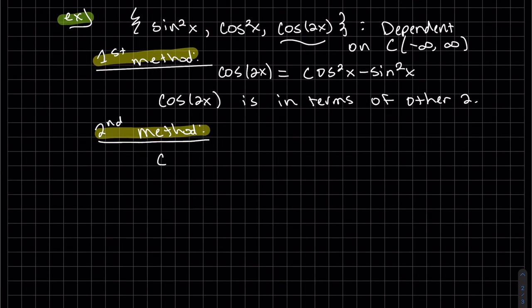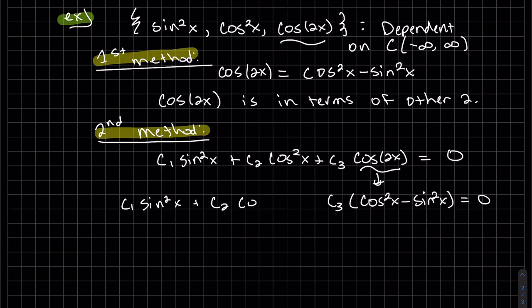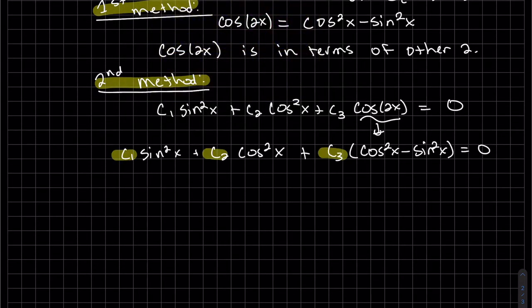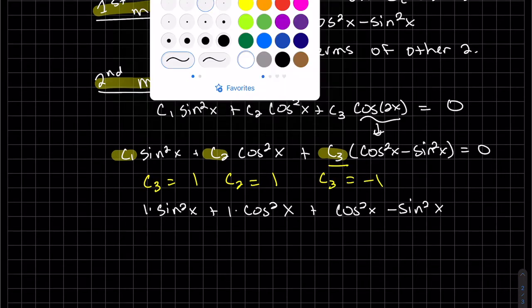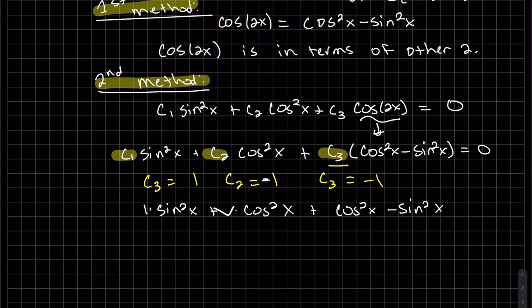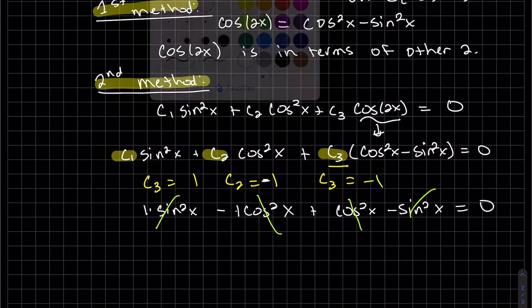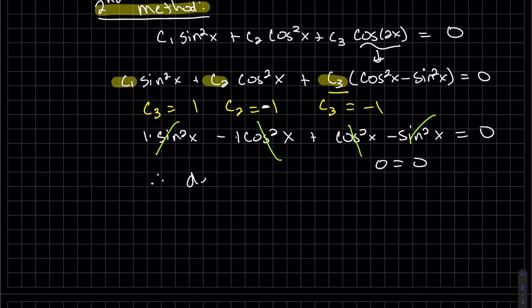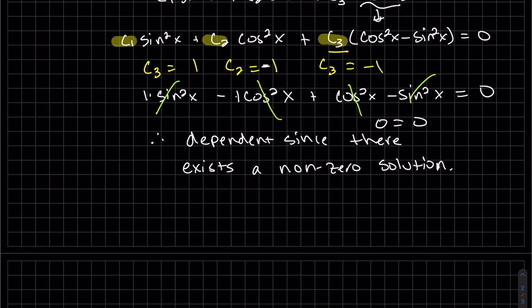So our second method, we write them as a linear combination. We can replace that with the identity. And then by just observing this, I think I can plug in. And I'll adjust it a little bit. So I just found a linear combination that equals zero, so therefore dependent. Since there exists a non-zero solution, which we just found. Those Cs don't have to equal zero.